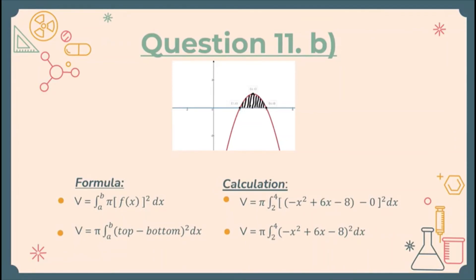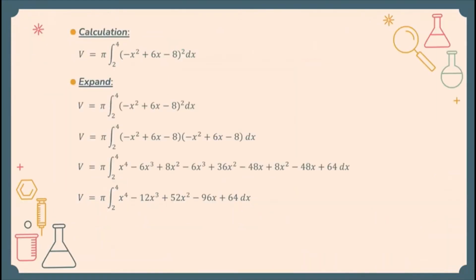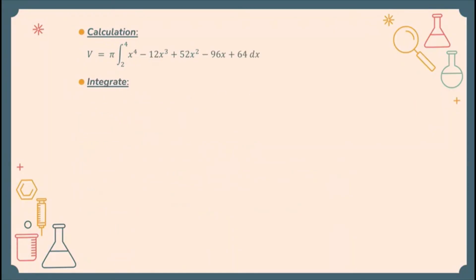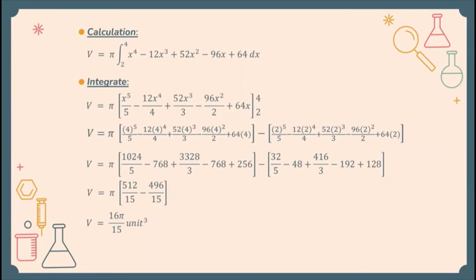The top function is negative x squared plus 6x minus 8, and the bottom is y equals 0. Subtracting gives bracket negative x squared plus 6x minus 8 squared. Expanding and simplifying, with limits from 2 to 4, we get pi times the integral from 2 to 4 of x to the 4th minus 12x cubed plus 52x squared minus 96x plus 64 dx. Integrating gives V equals 16π over 15 cubic units.